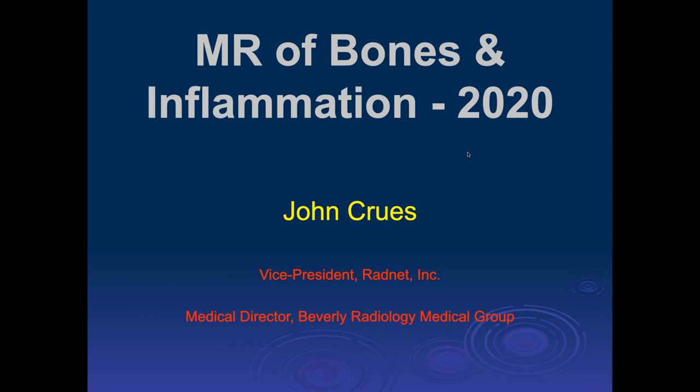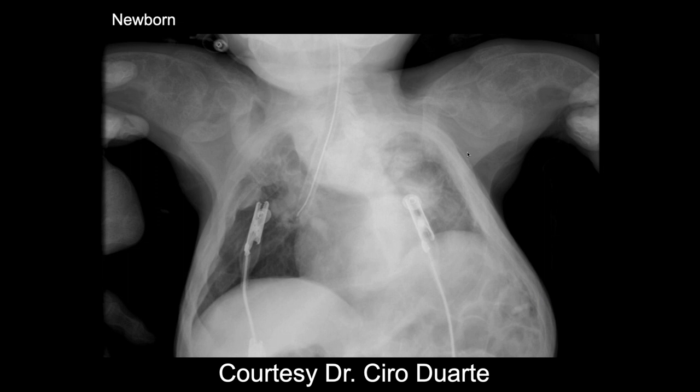Ashu, why don't you take this one? So this is a newborn. You can see there's extensive expansile lytic changes to the bones, especially the upper extremities. It involves mostly the humerus, but also parts of the scapula.